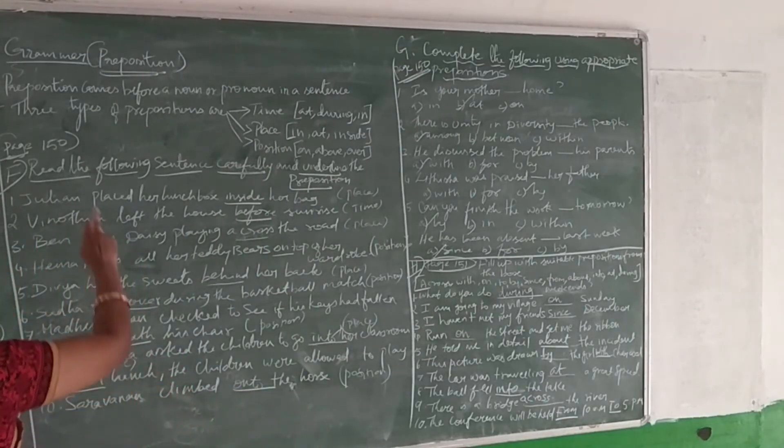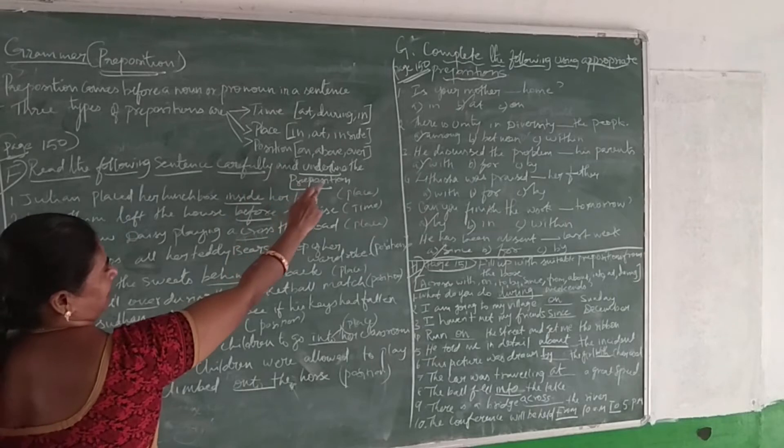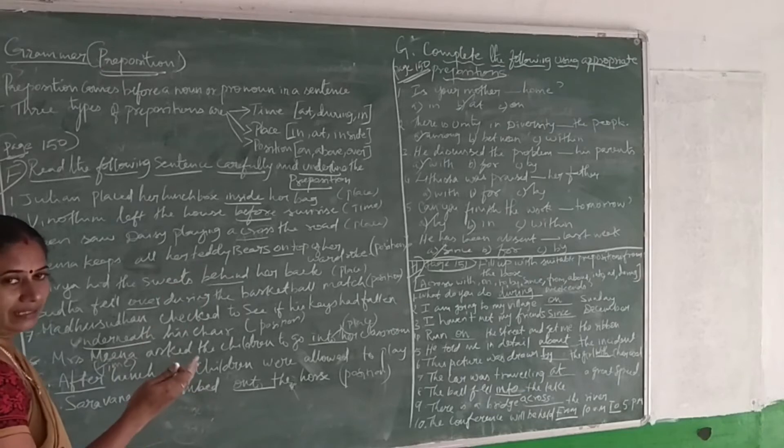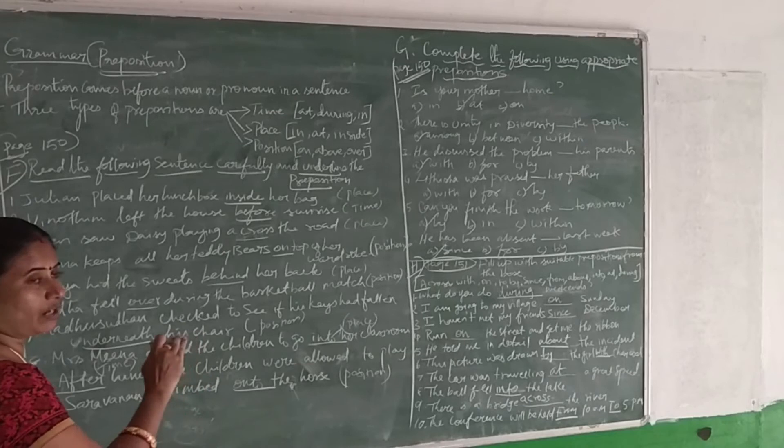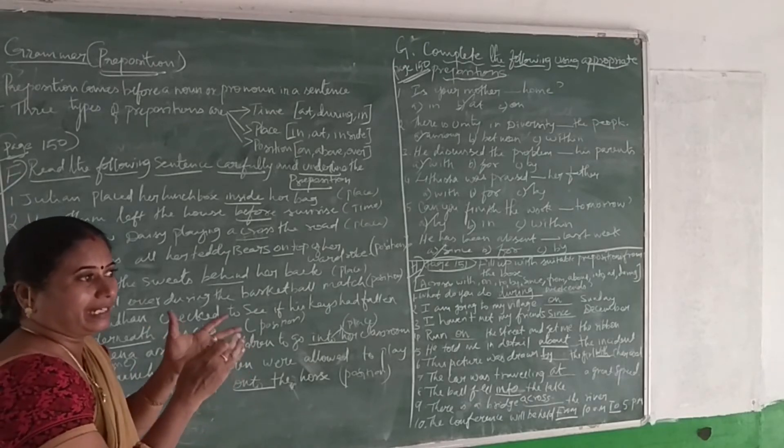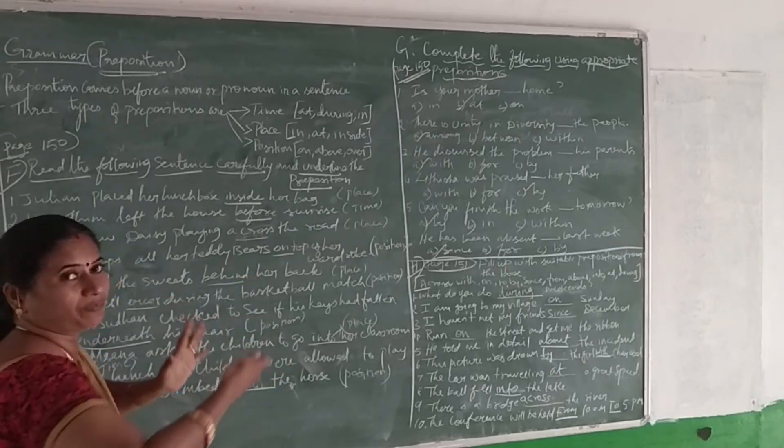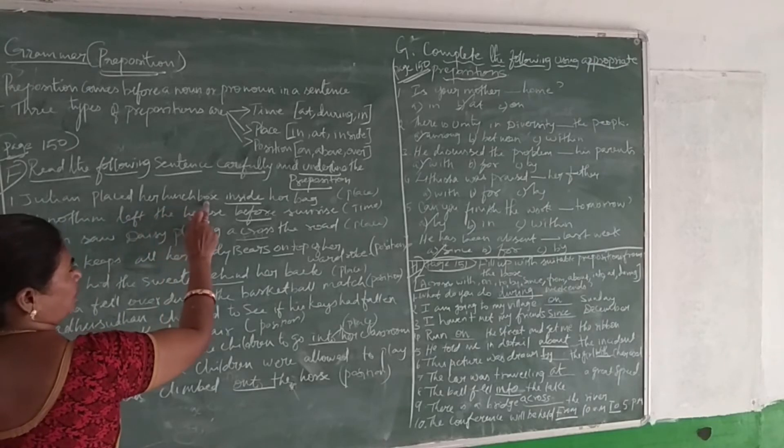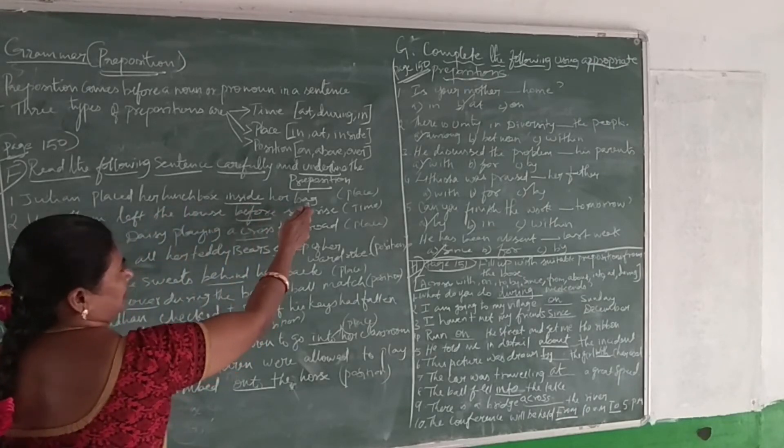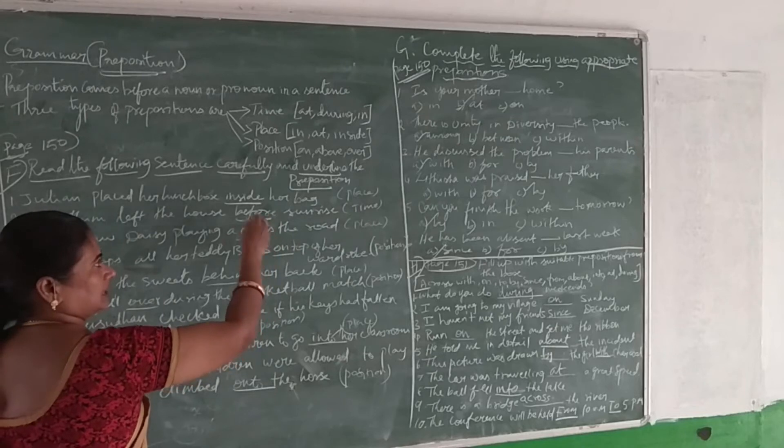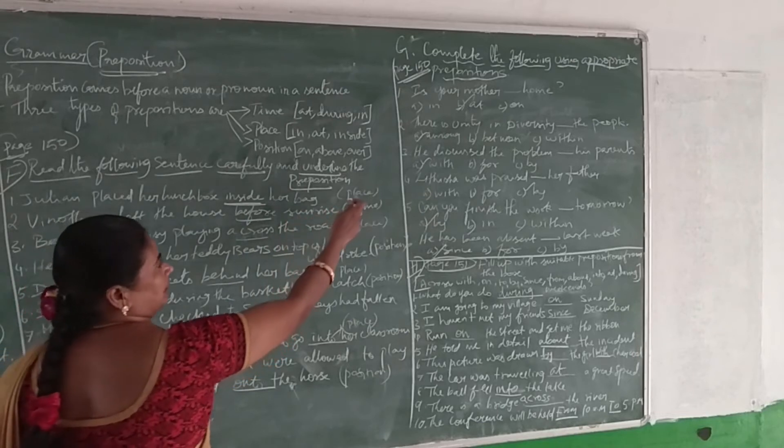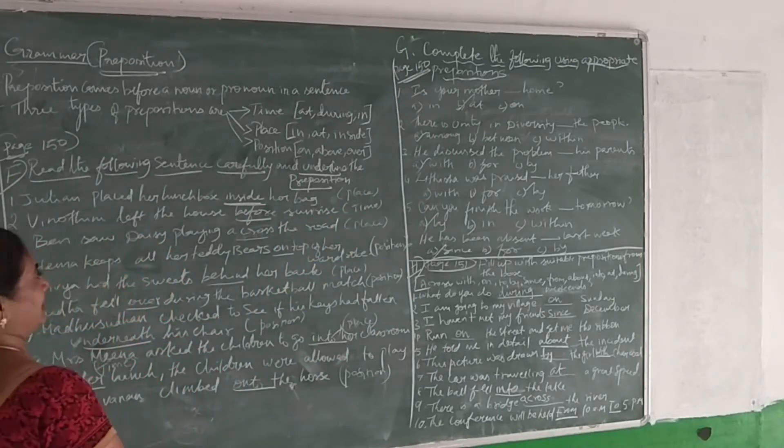Now we have given: read the following sentences carefully and underline the prepositions. We have given the sentence, among this you have to find out which is the preposition word, then underline it and specify what type of preposition it denotes. One is, 'Julian faced a language test inside the room.' The sentence was given like this. You want to underline 'inside'. 'Inside' means it denotes the place preposition.